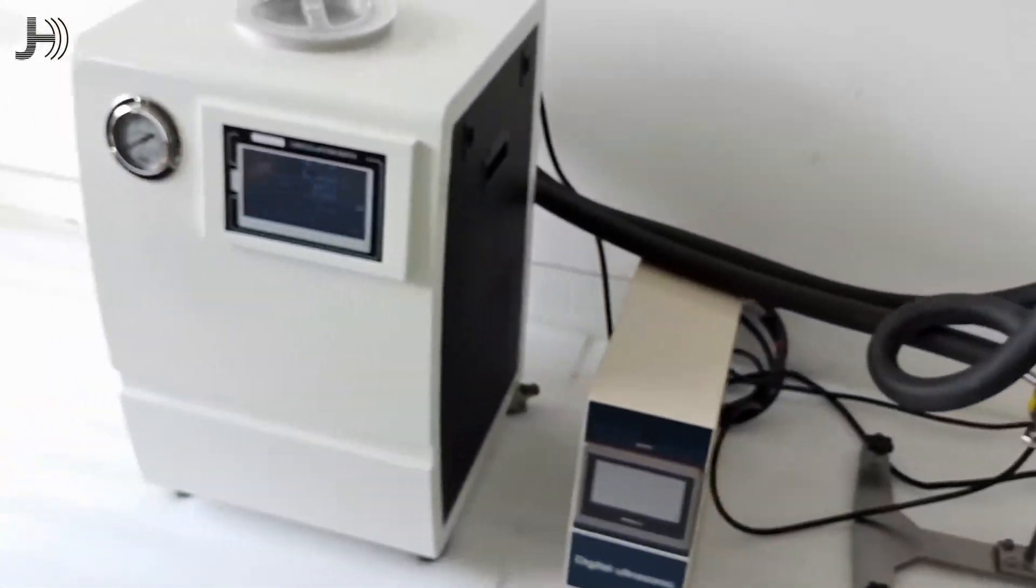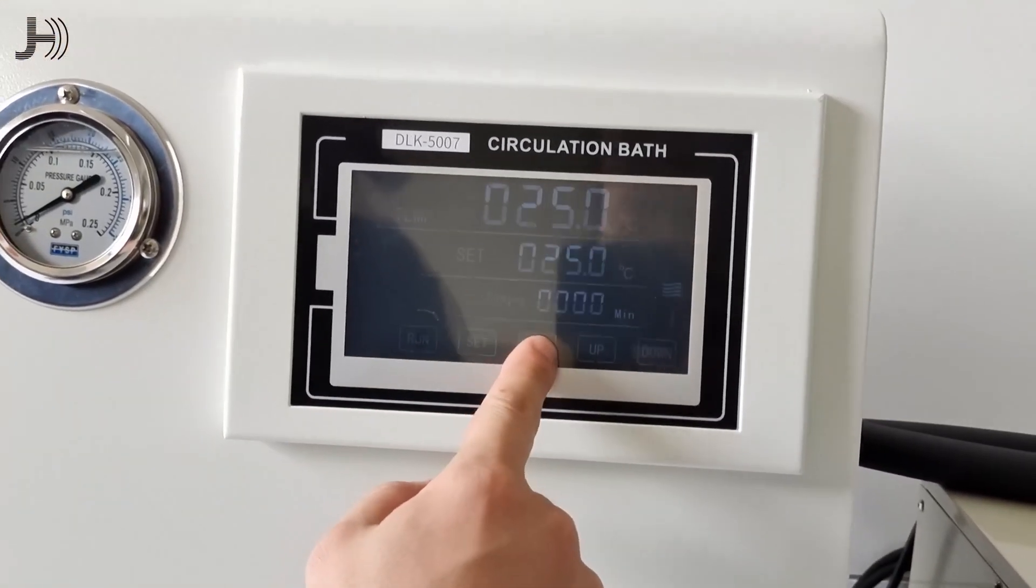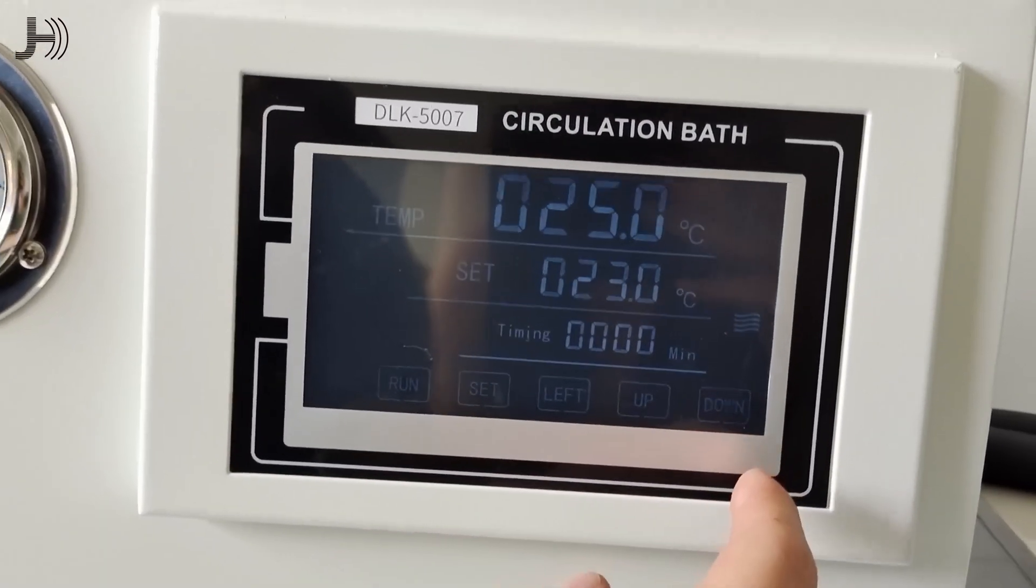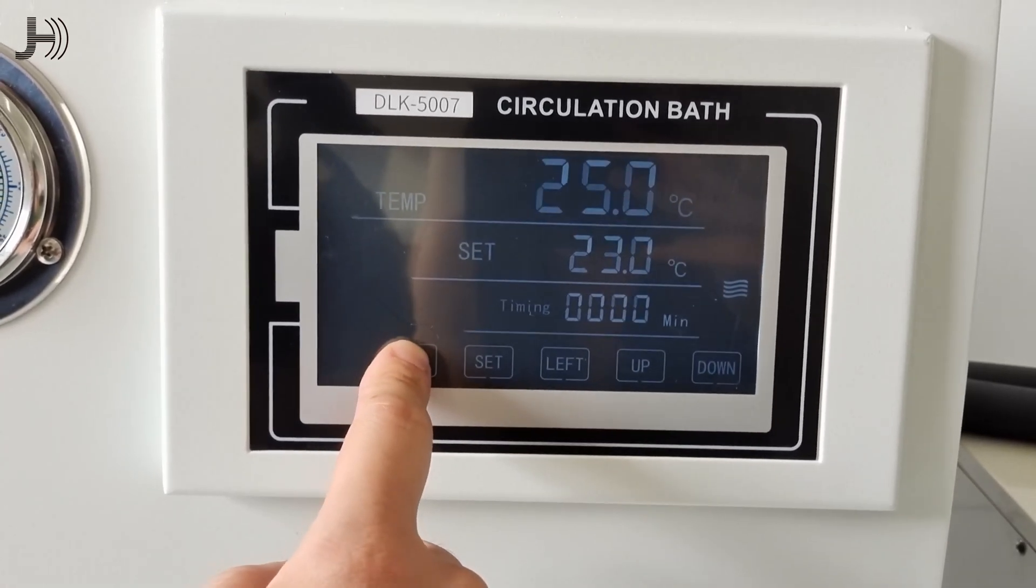Let's turn on the chiller. This chiller can control the liquid's temperature and the temperature can be set. Run it.